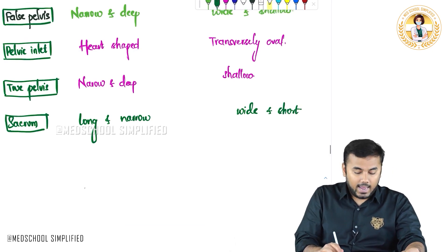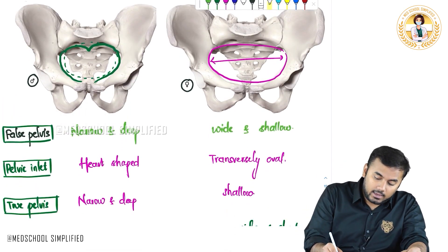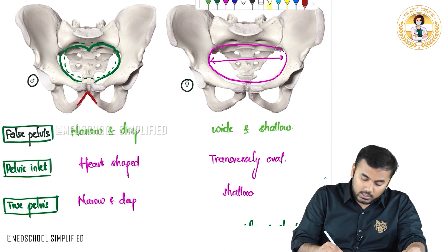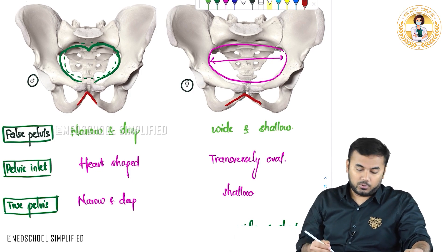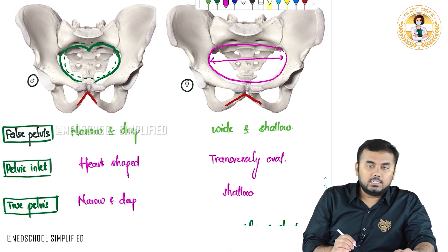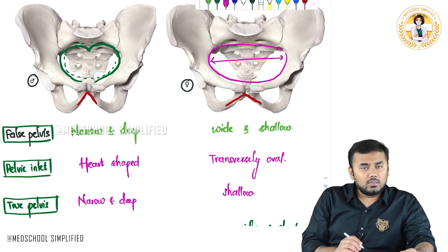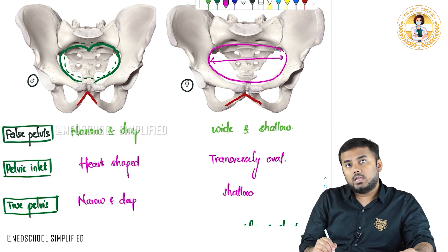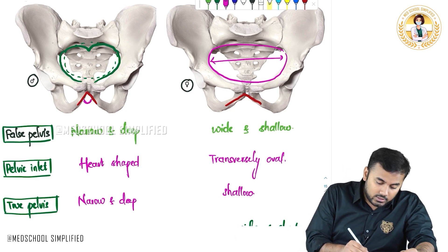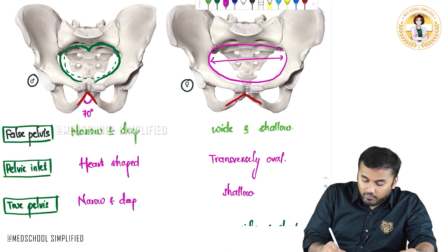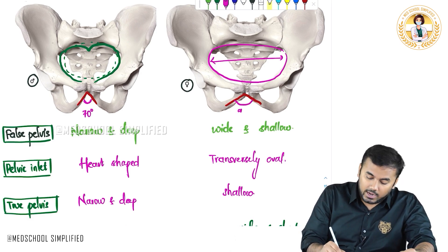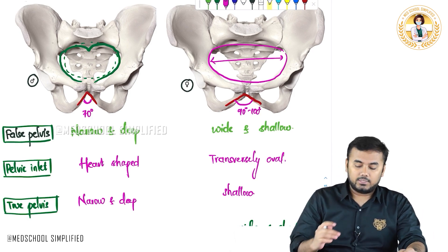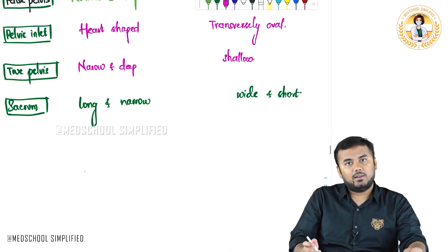The next important feature is the sub-pubic angle, which is the angle below the pubis. In the male pelvis, the sub-pubic angle is narrow — around 70 degrees — whereas in the female pelvis the sub-pubic angle is wide — around 90 to 100 degrees. These are the key differences between the male and female pelvis.